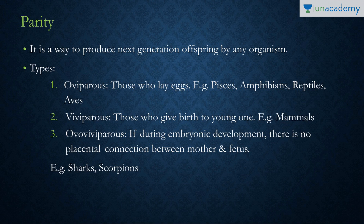Viviparous organisms give birth to live young — mammals are the best example. In ovoviviparous organisms, during embryonic development there is no placental connection between the mother and the fetus; however, a hard egg is not formed directly. Instead, a lesser-developed version of the adult is formed. Examples include sharks and scorpions.